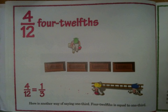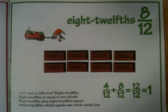Four twelfths. Here is another way of saying one third. Four twelfths is equal to one third. Eight twelfths. Eight twelfths is equal to two thirds. Four twelfths plus eight twelfths equals twelve twelfths, which equals one whole candy bar.